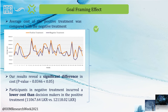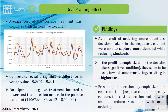We found that decision makers in the negative treatment capture more demand while reducing stockouts as a result of ordering more quantities. Further, we suggest that if profit is emphasized for decision makers, they seem to be biased towards under-ordering, resulting in higher cost. Thus, our results show that presenting decisions by emphasizing cost reduction greatly reduces the cost, as decision makers were able to reduce stockouts with over-ordering.